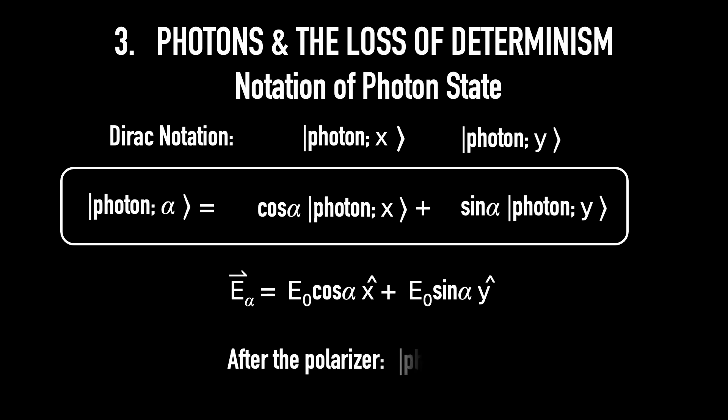In summary, we can't determine whether a single photon goes through or gets absorbed, only the probability. This marks the loss of determinism. We'll explore even more profound features of quantum physics, quantum superposition, and quantum entanglement in lecture two. For now, lecture one ends here. Thank you for watching.